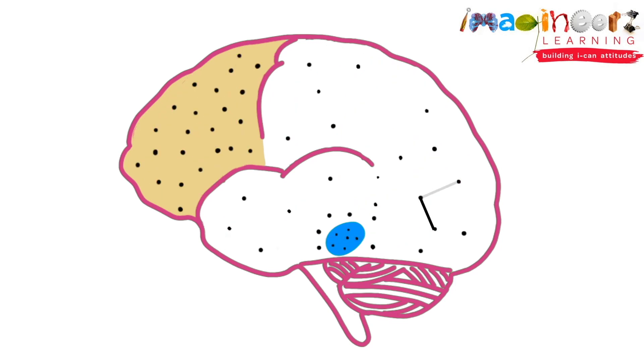In our brains, there are tiny cells called neurons. Every time we make a choice, two neurons form a connection called the synapse. If you make the same choices repeatedly, those synapses become stronger and it's easier for our brains to travel those pathways.